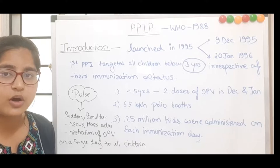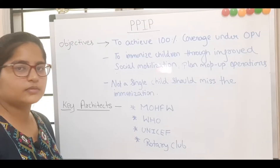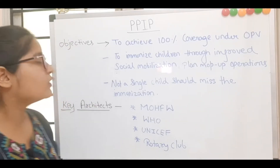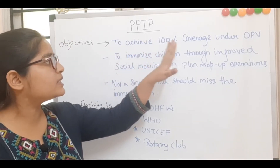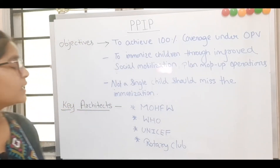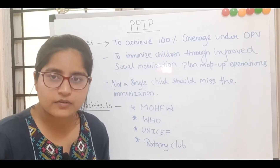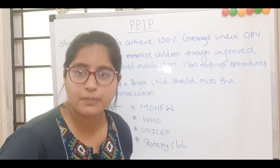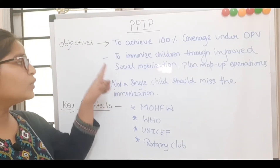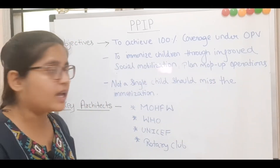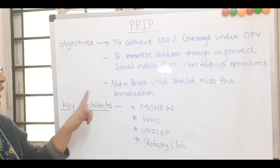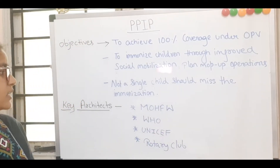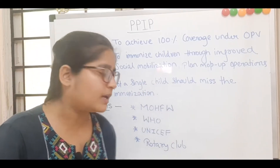The primary objectives of the PPI program are: first, to achieve 100% coverage under OPV; second, to immunize children through improved social mobilization and planned mop-up operations; and third, not a single child should miss the immunization.